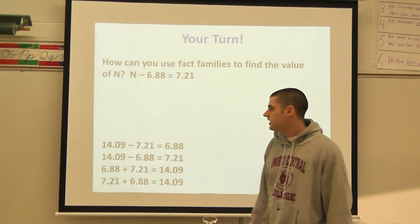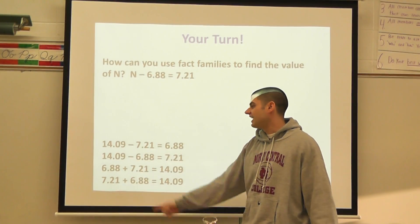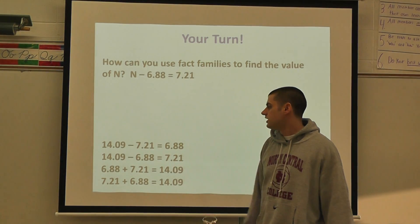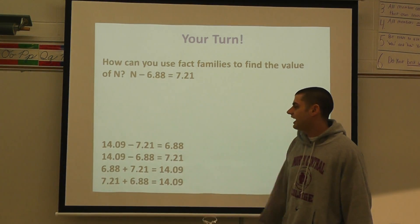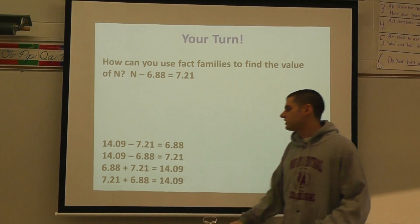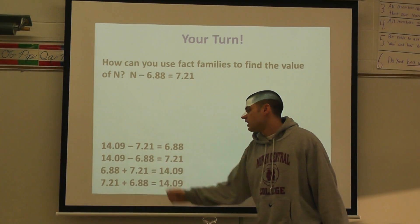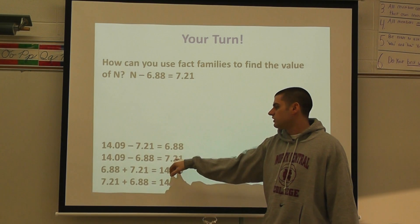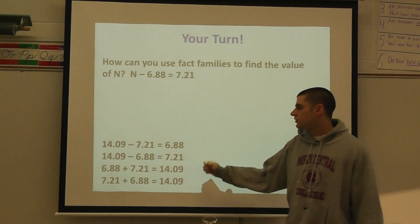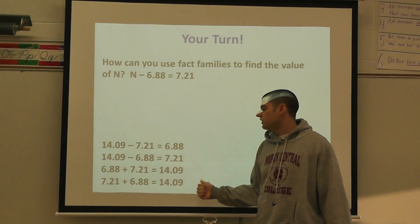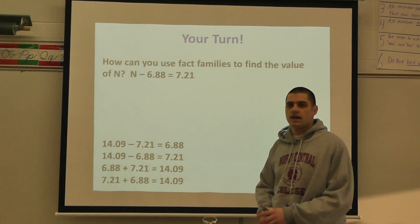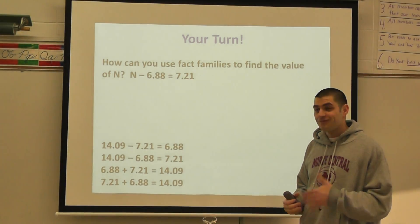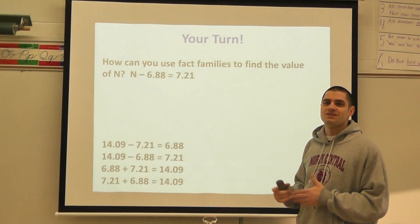If I think this answer is correct, it should work for N at the top up here. So if I had 14.09 minus 7.21, that would equal 6.88. And if I took 14.09 minus 6.88, that would leave me with 7.21. Again, when looking at these problems, it is important to determine our fact families to make sure that we have answered the problems correctly.